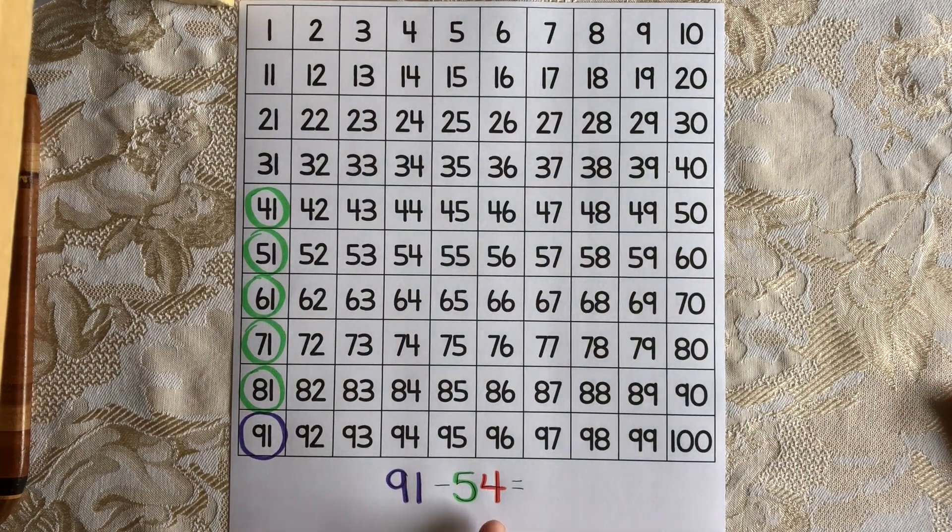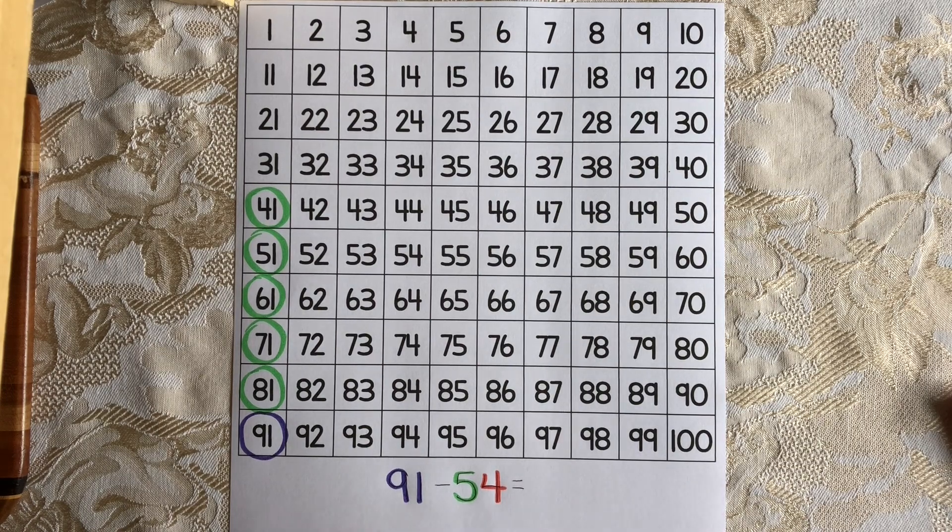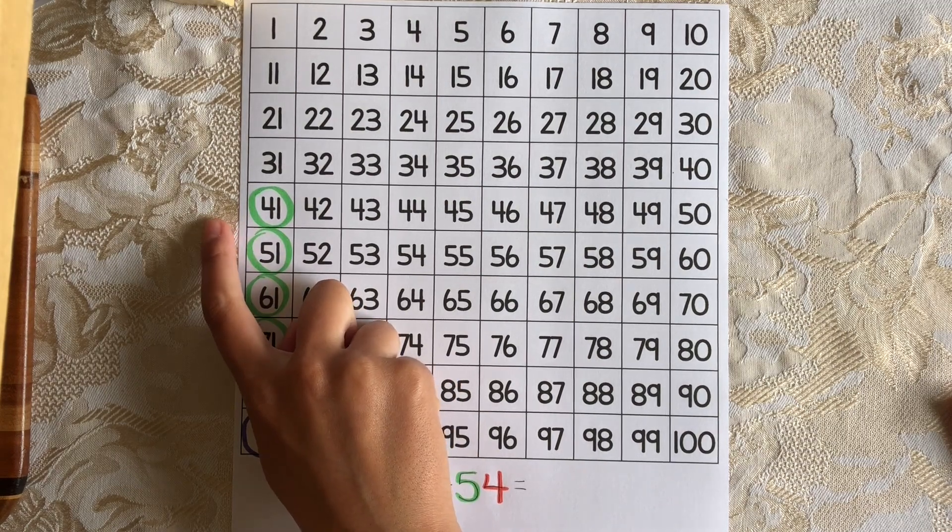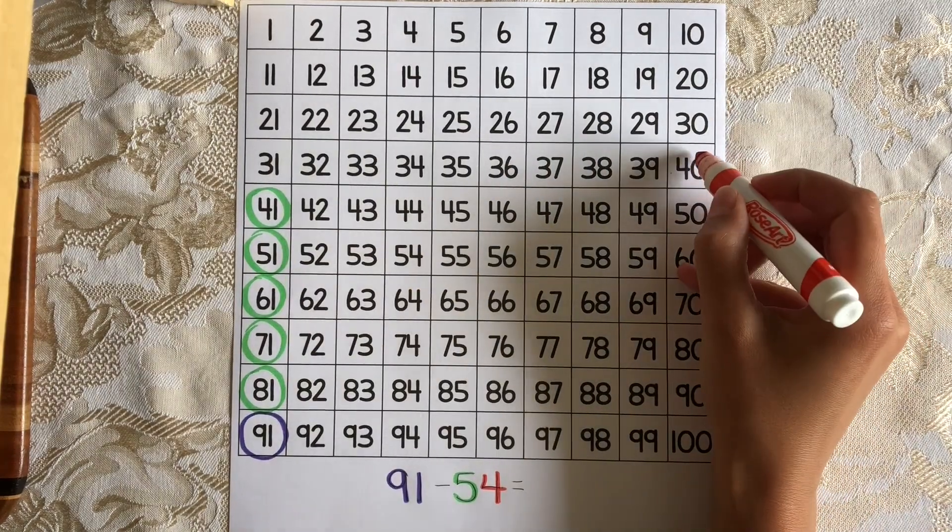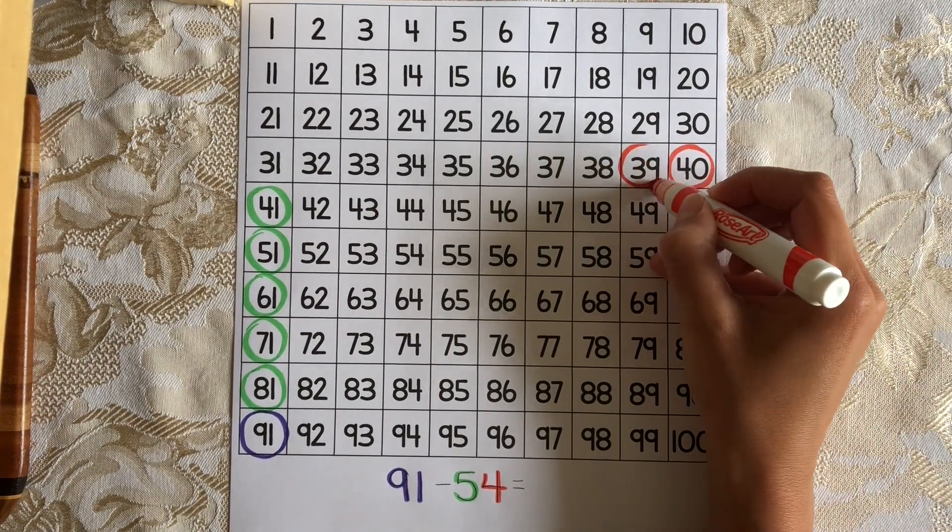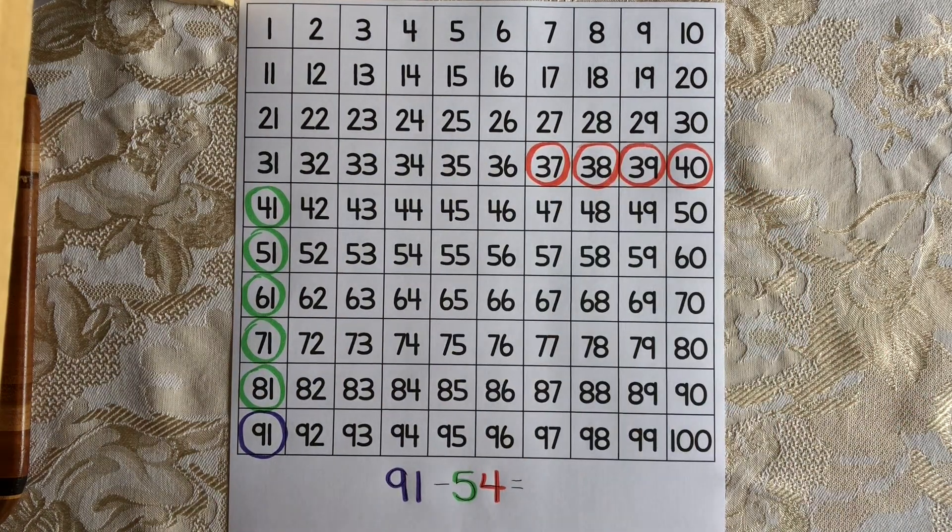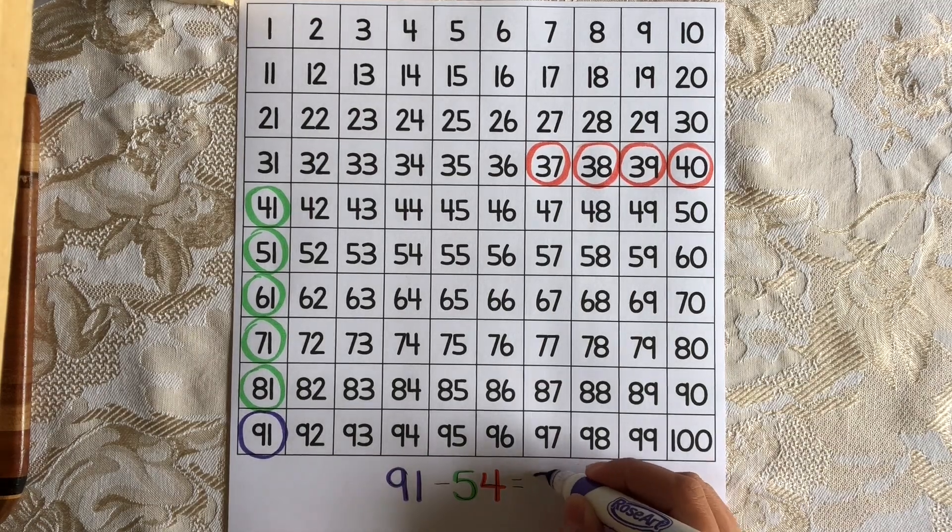And now for my 1s, I need to subtract 4 ones, and we're going to move to the left to subtract 1s. But you'll notice there's no number over here, so that means we're going to have to go up to the next row up there and start there. So here's 1, 2, 3, 4. And I landed on 37, which means that 91 minus 54 is 37.